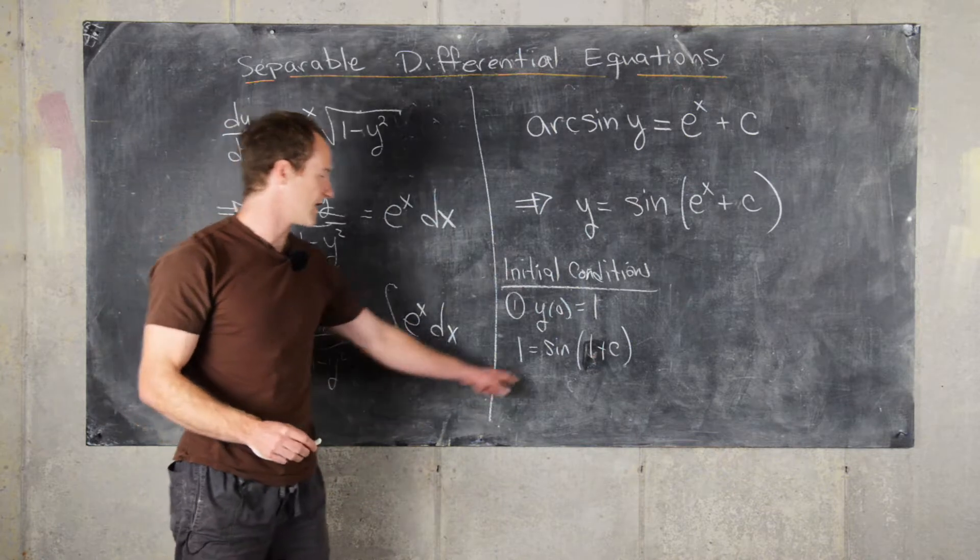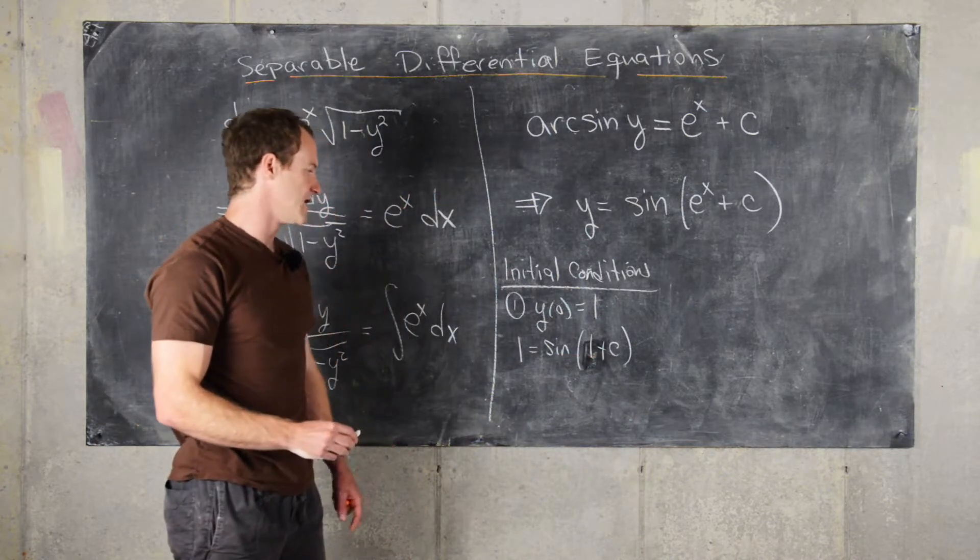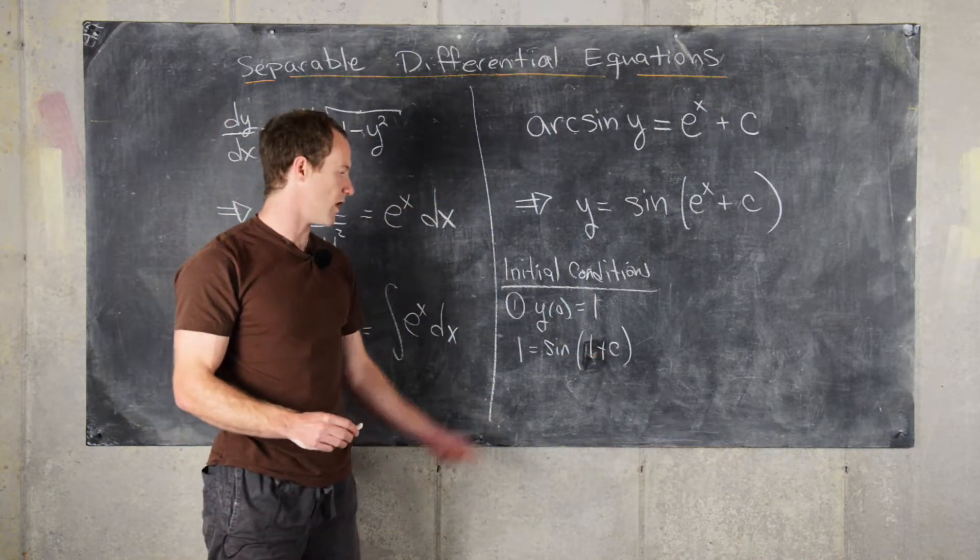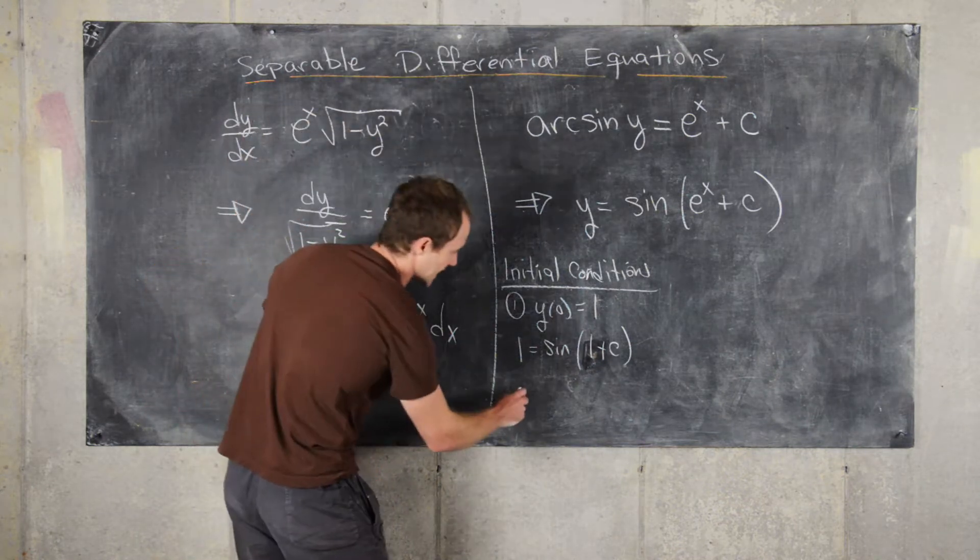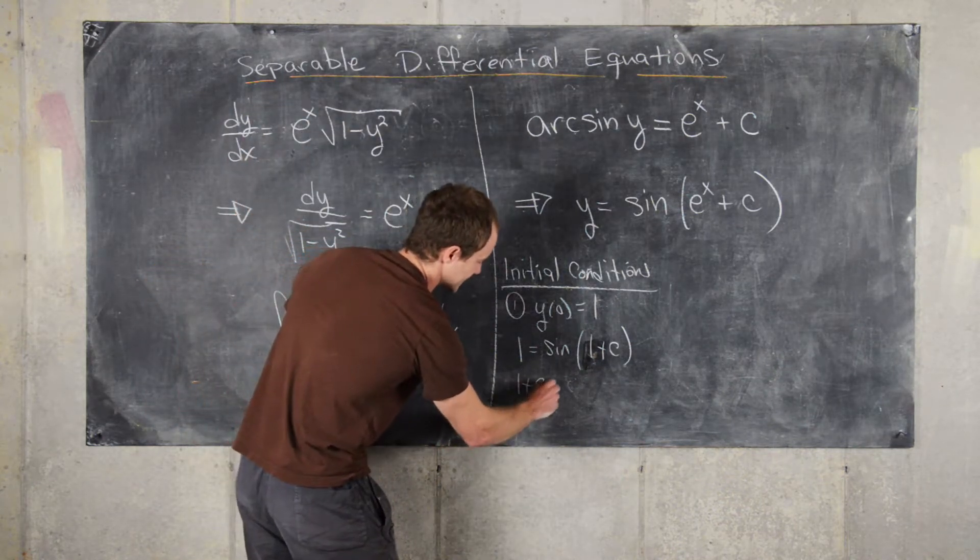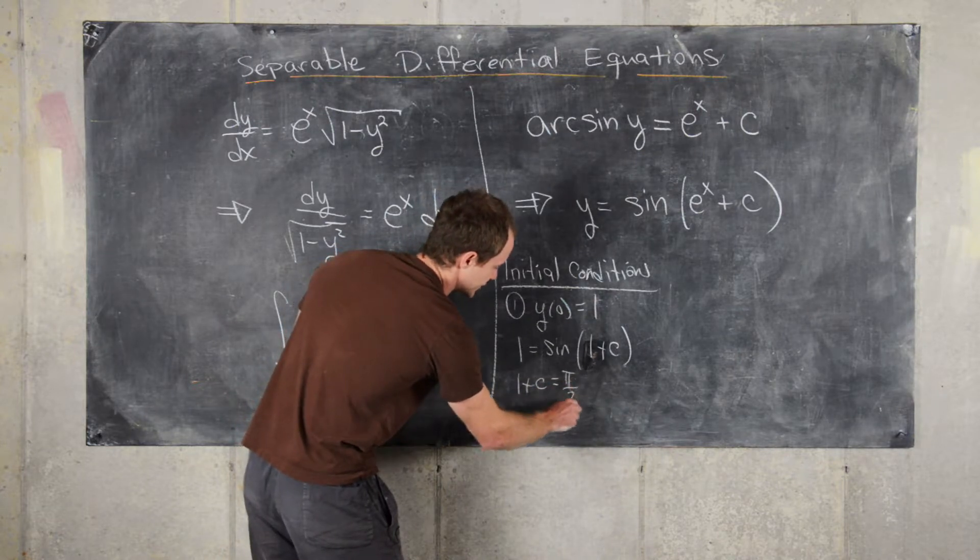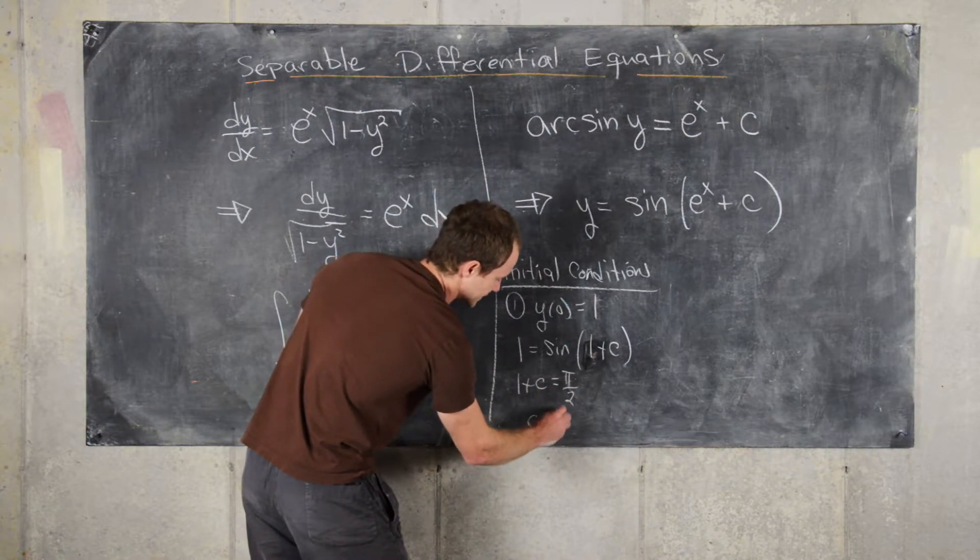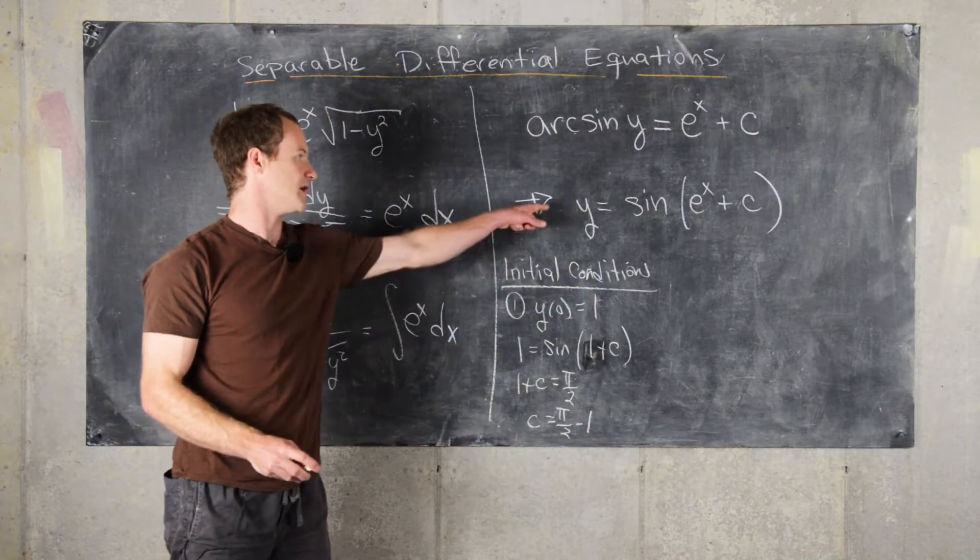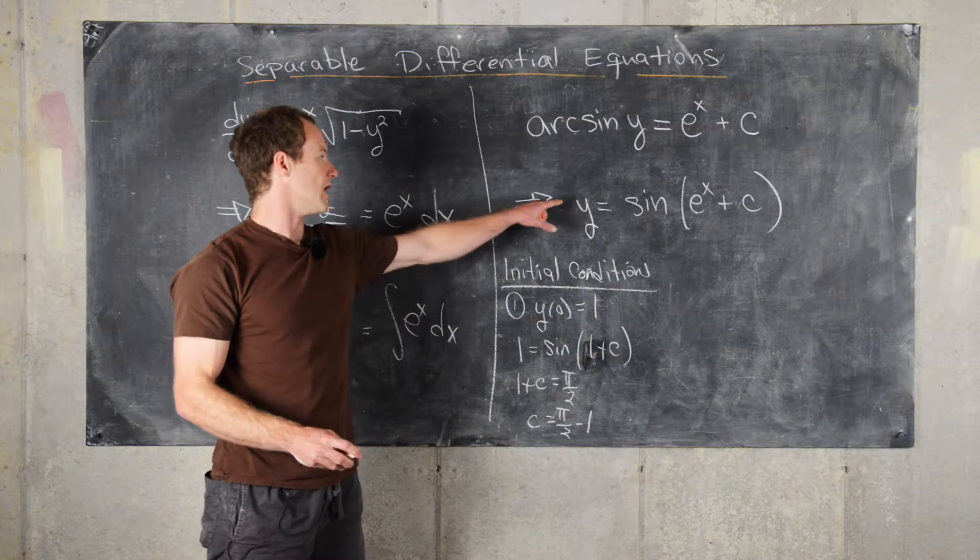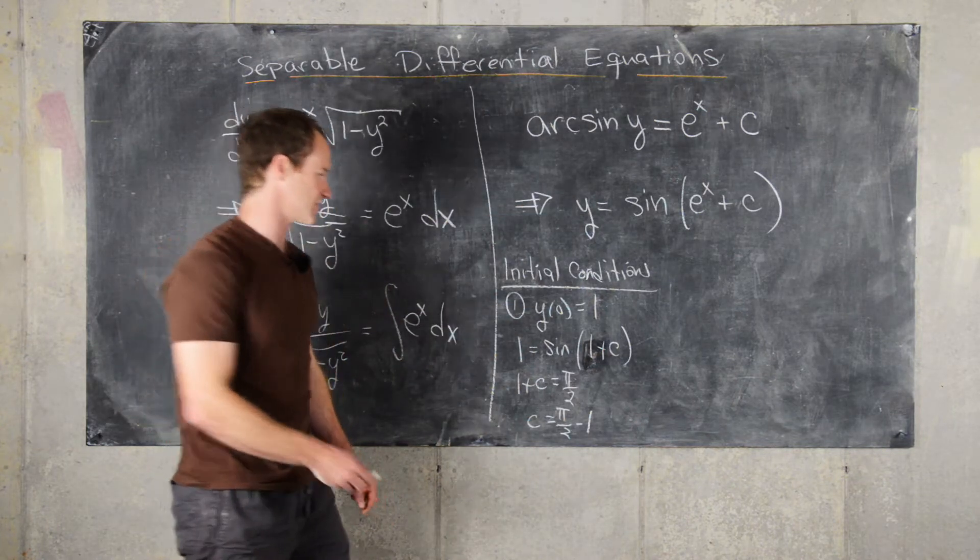Now, we can look at values for when sine is equal to 1, and so pi over 2 comes to mind. And so we get 1 plus c equals pi over 2, in other words, c equals pi over 2 minus 1. And so that will be our solution for this initial condition.